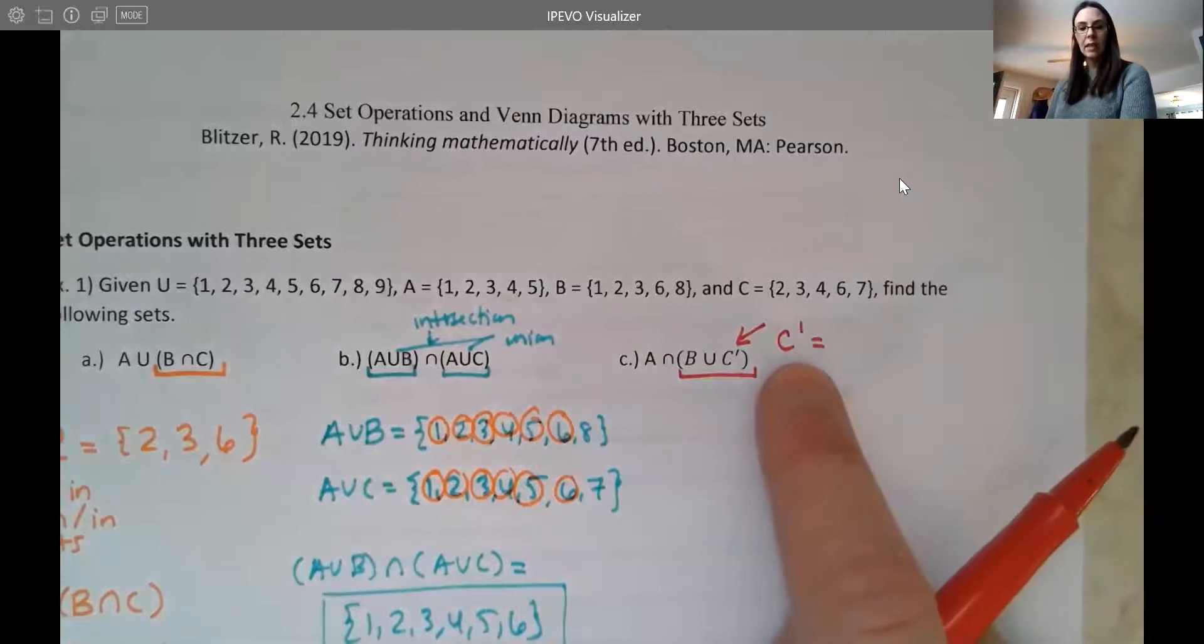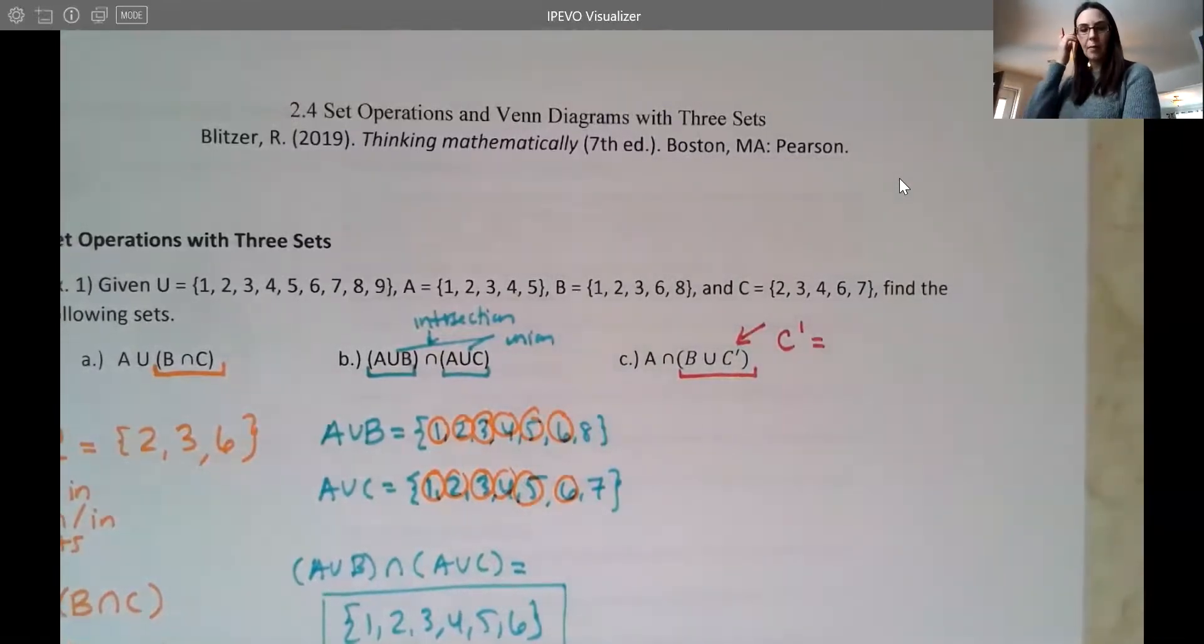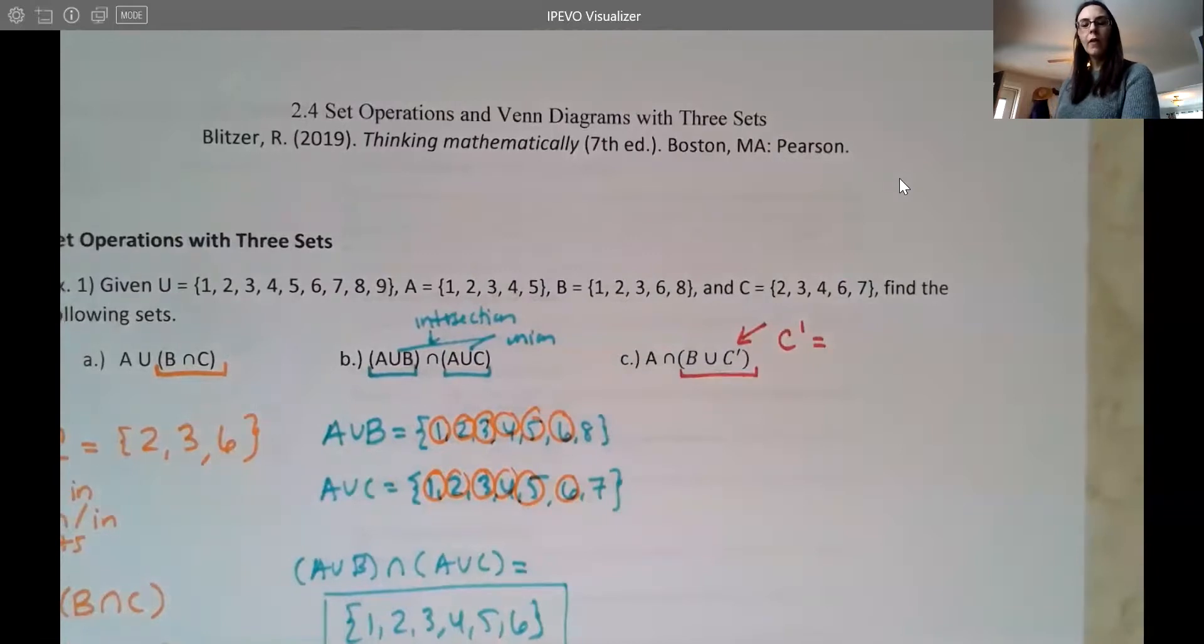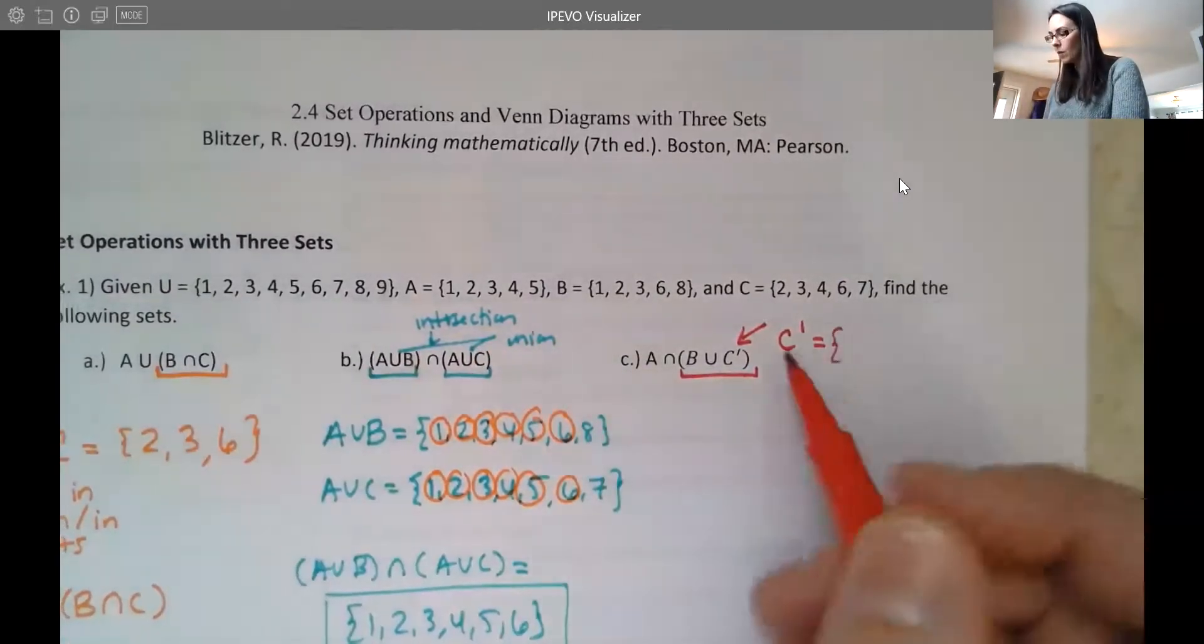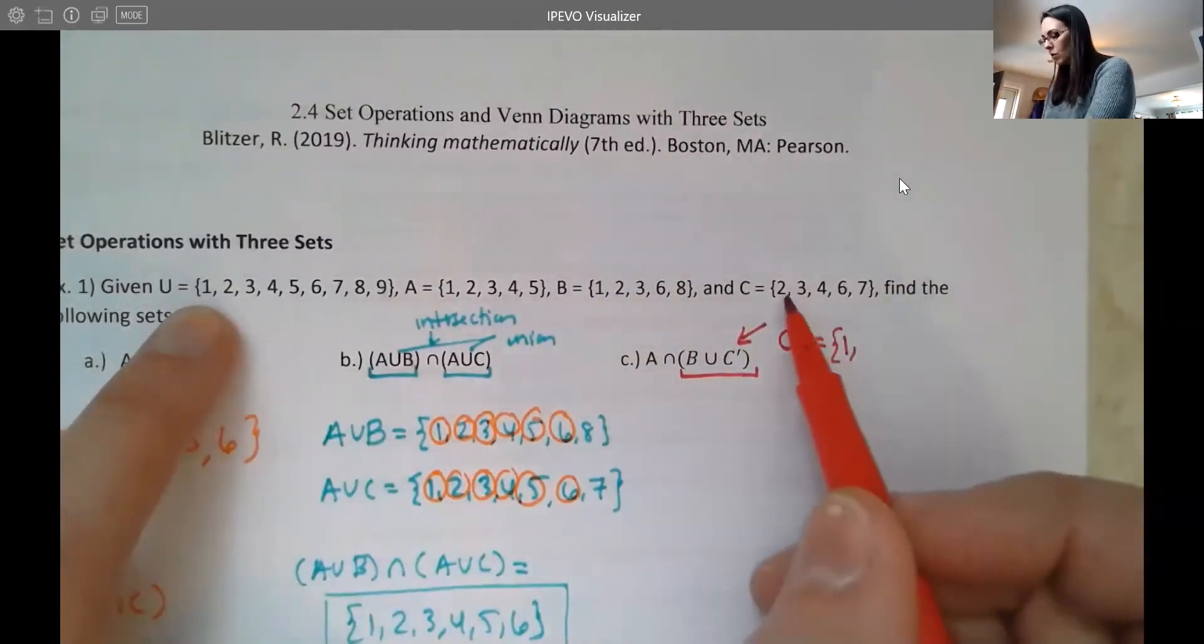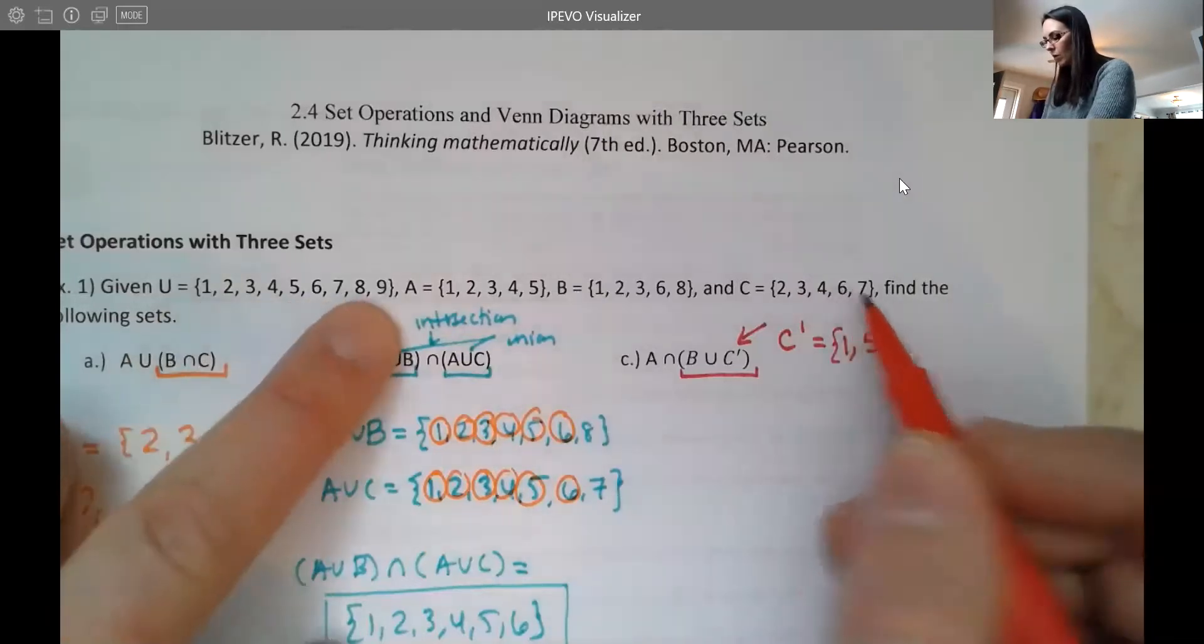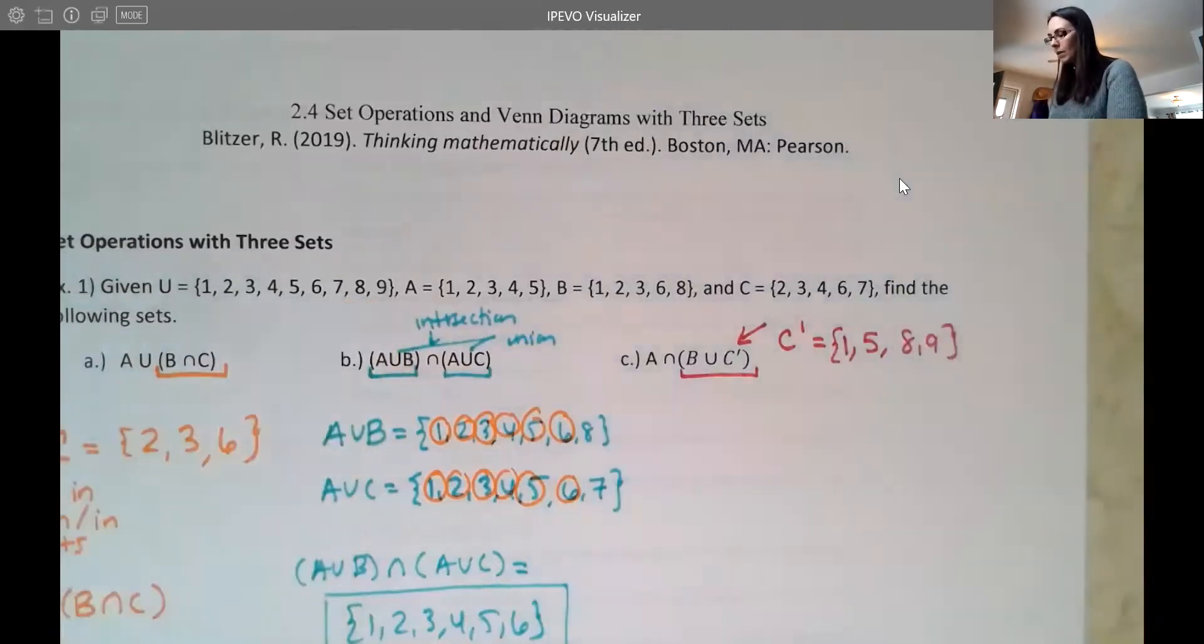So the complement of C, you can think of as not C. A lot of us use that word not instead for complement, or sometimes we'll say C not here, using that as the word not. So I want all the elements in the universal set that are not in C. So the stuff that's left over. So if I compare, I have the number one. Now two, three, and four are in C, so I'm not going to include those. I'll include five. I have six and seven here, so I won't include those. And I have eight and nine. So all the numbers that are not in C.